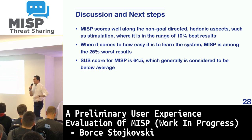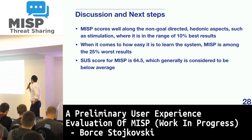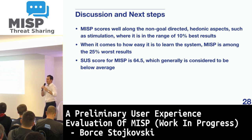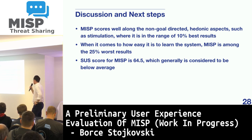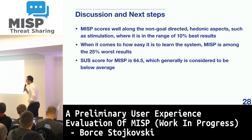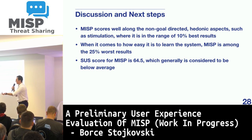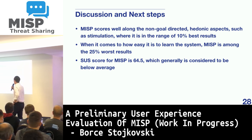When it comes to the SUS — the second scale — the average score is 64.5. This benchmark value is obtained by analyzing a large number of different products, where 68 is considered the average value. So 64.5 is considered below average, which may be due to the difficulty of learning the platform.